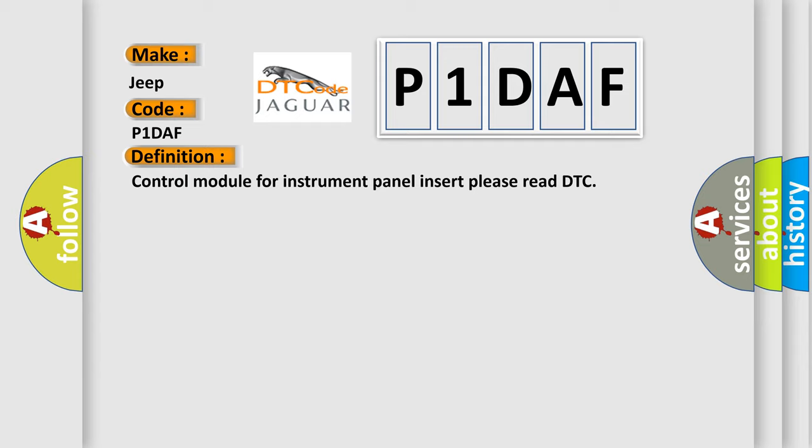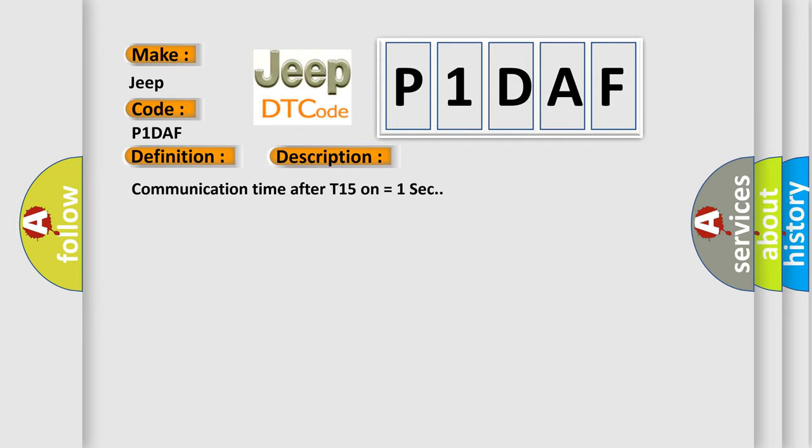And now this is a short description of this DTC code: Communication time after T15 ON equals 1 second.